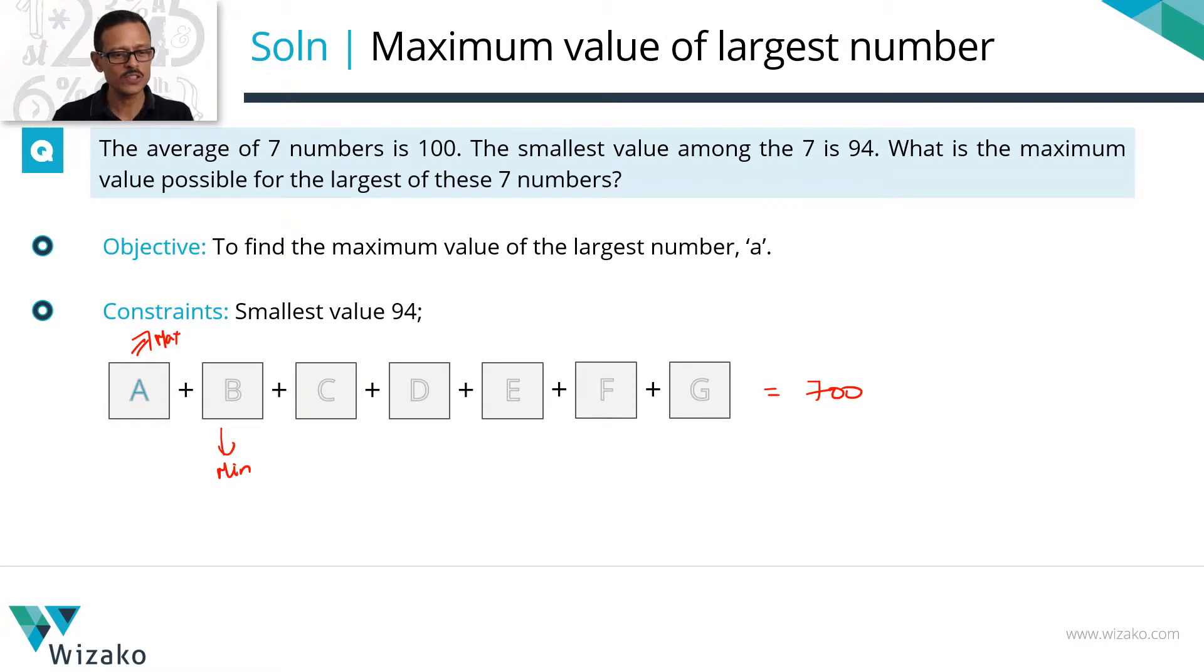Let's start with B. How low can the value of B be? That's where this constraint comes of use. The smallest value among these 7 numbers is a 94. Let's make B to be a 94. So let's next move on to minimizing C. So if I minimize each of these 6 numbers, consequently we would have maximized A. That's evident to us.